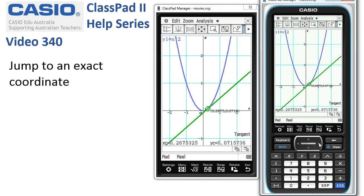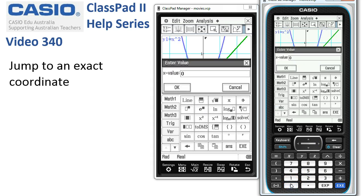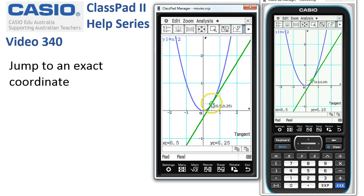Tracing kind of takes us around there, but the easiest way again is simply to hit 0, complete it with 0.5, tap OK. ClassPad jumps straight to that point, and then we can hit execute to actually draw the tangent and get the equation down there.